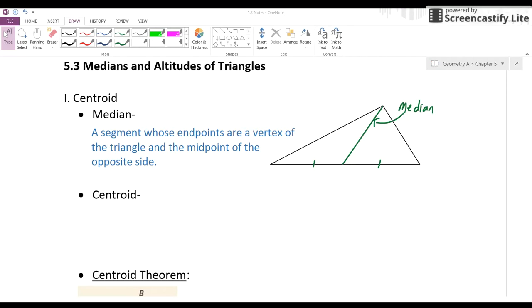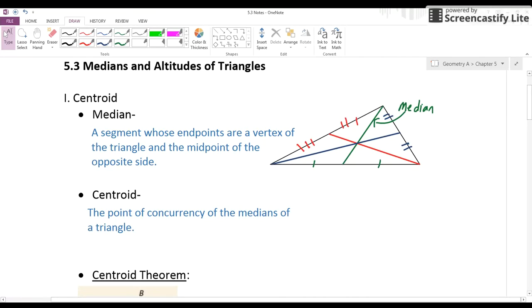So now we have the point of concurrency of the medians of a triangle. You've got three medians that I've done here in green, blue, and red. And then this point where they all intersect, that point of concurrency, this is what we call the centroid.